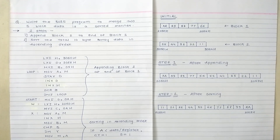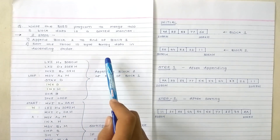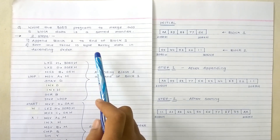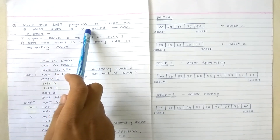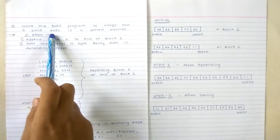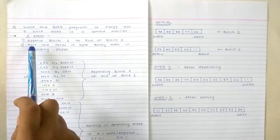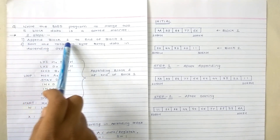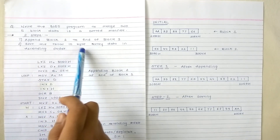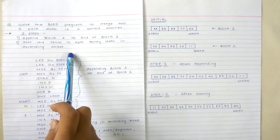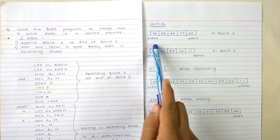In this video we are going to discuss how to merge two block data into one block in a sorted manner. The question is: write an 8085 program to merge two five-block data in a sorted manner. There are two steps: first, append block 2 to the end of block 1, and second, sort the total 10-byte array data in ascending order.